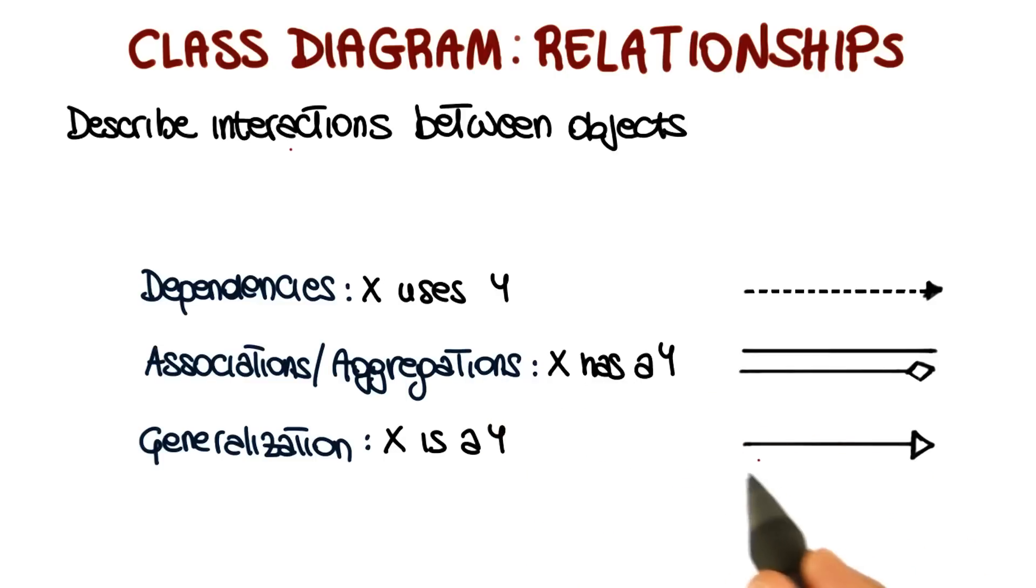It's represented with a solid directed line with a large open arrowhead at the end, going from the more specialized class to the less specialized class, so going from the subclass to the superclass. So now let's look at each relationship in more detail using our example, our course management system.